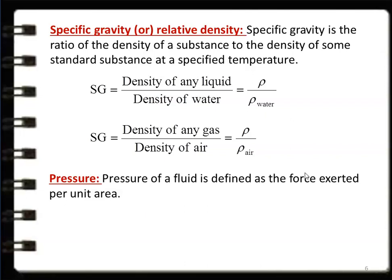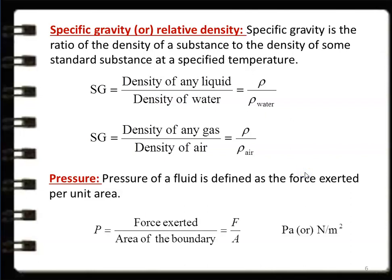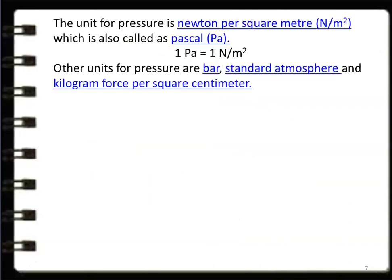Pressure is an important thermodynamic property. Pressure is defined as force exerted per unit area — force per area of the boundary — which is F/A. The unit is pascal or newtons per meter square. Force is in newtons and area is in meter square. One newton per meter square equals one pascal. One pascal equals one newton per meter square.